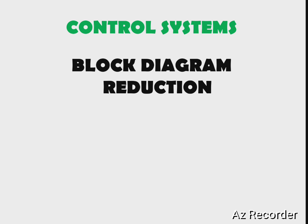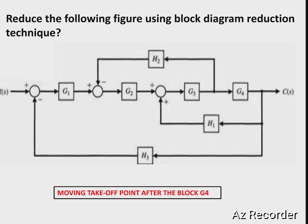In this video, I am explaining a block diagram reduction example in control systems. The given block diagram consists of blocks G1, G2, G3, G4 and feedback blocks H1, H2, H3, along with summing points and takeoff points. To reduce this block diagram, we use series connection, parallel connection, and feedback connection formulas, and we move takeoff points and summing points if necessary.